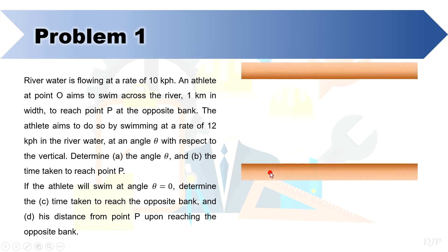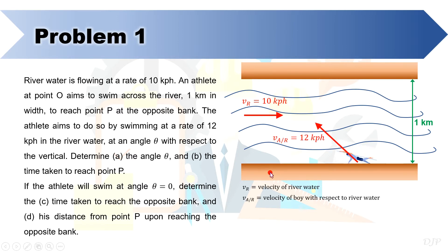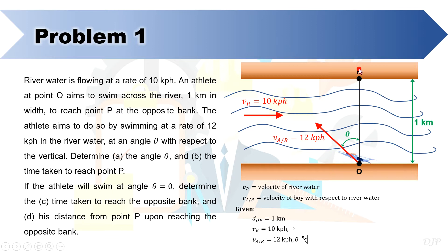For our first problem, we are given a river 1 km wide with water flowing at the rate of 10 kph. An athlete wishes to swim with a velocity of 12 kph in the river at an angle theta with respect to the vertical in order to end up straight from point O to point P on the other side. We should denote the 12 kph as the relative velocity of the athlete with respect to the river water because that describes his motion through the waters.